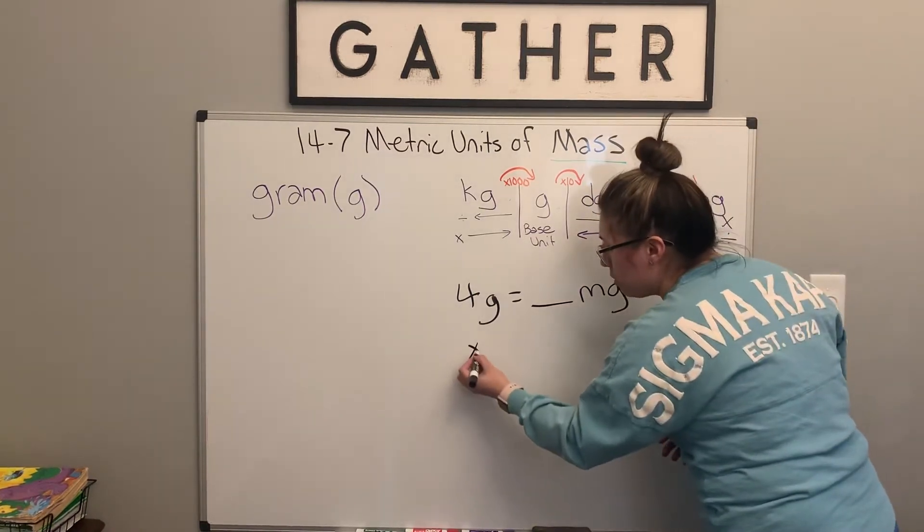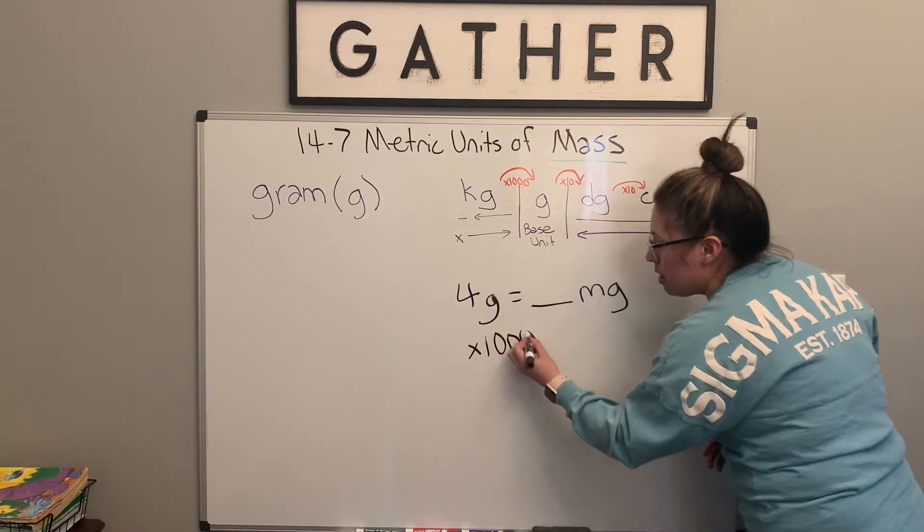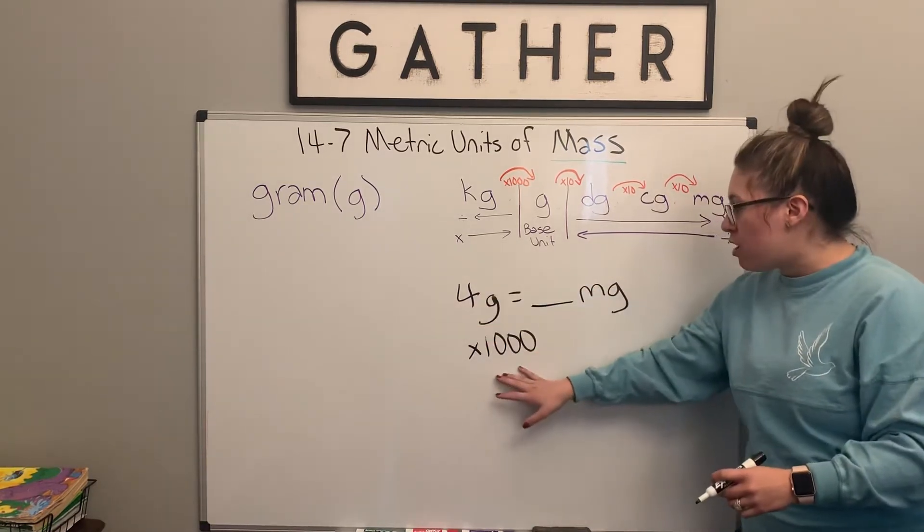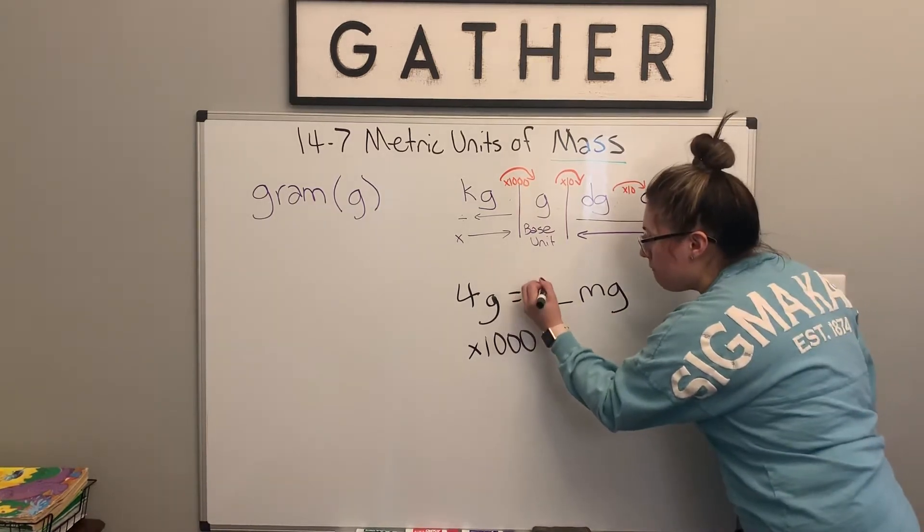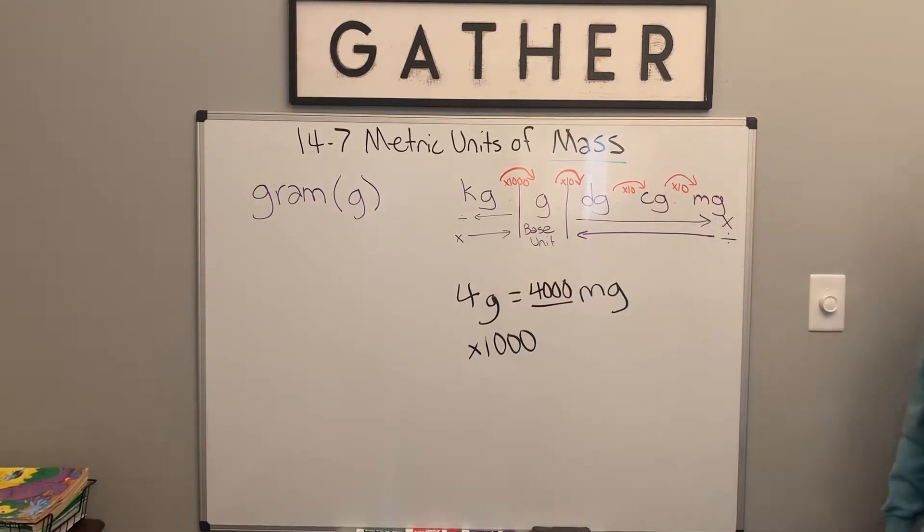So we want to multiply by one thousand. So you're looking at four times one thousand is going to be how many milligrams that is. So four times a thousand is four thousand.